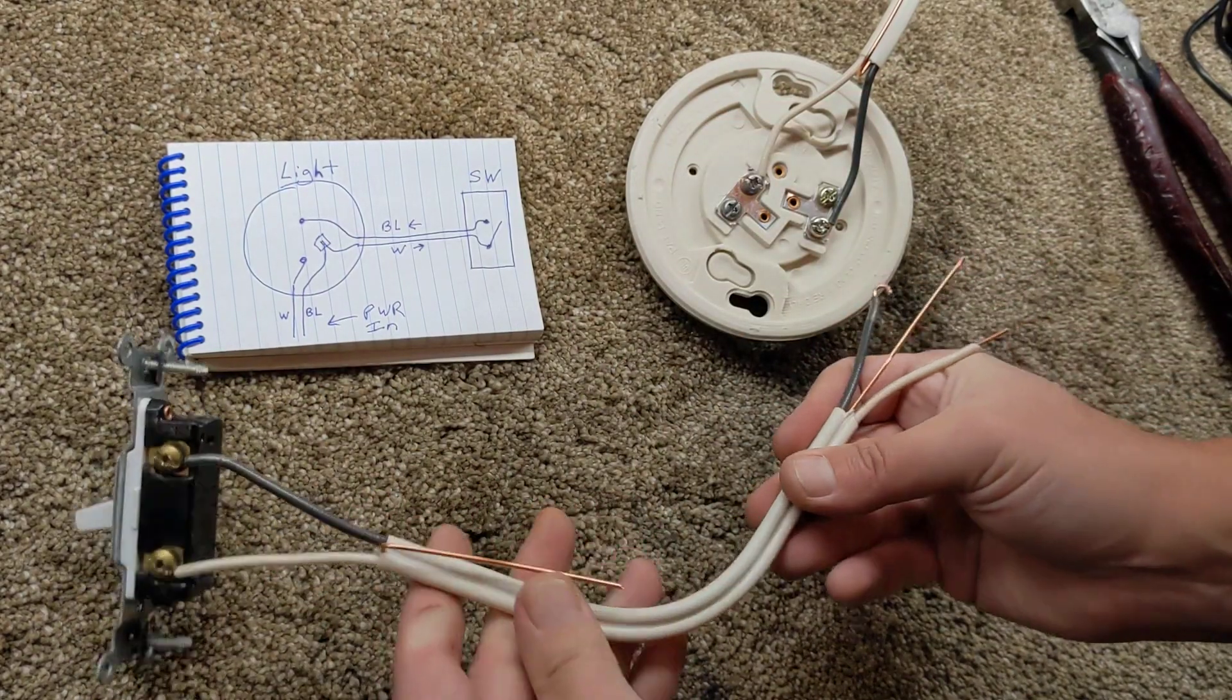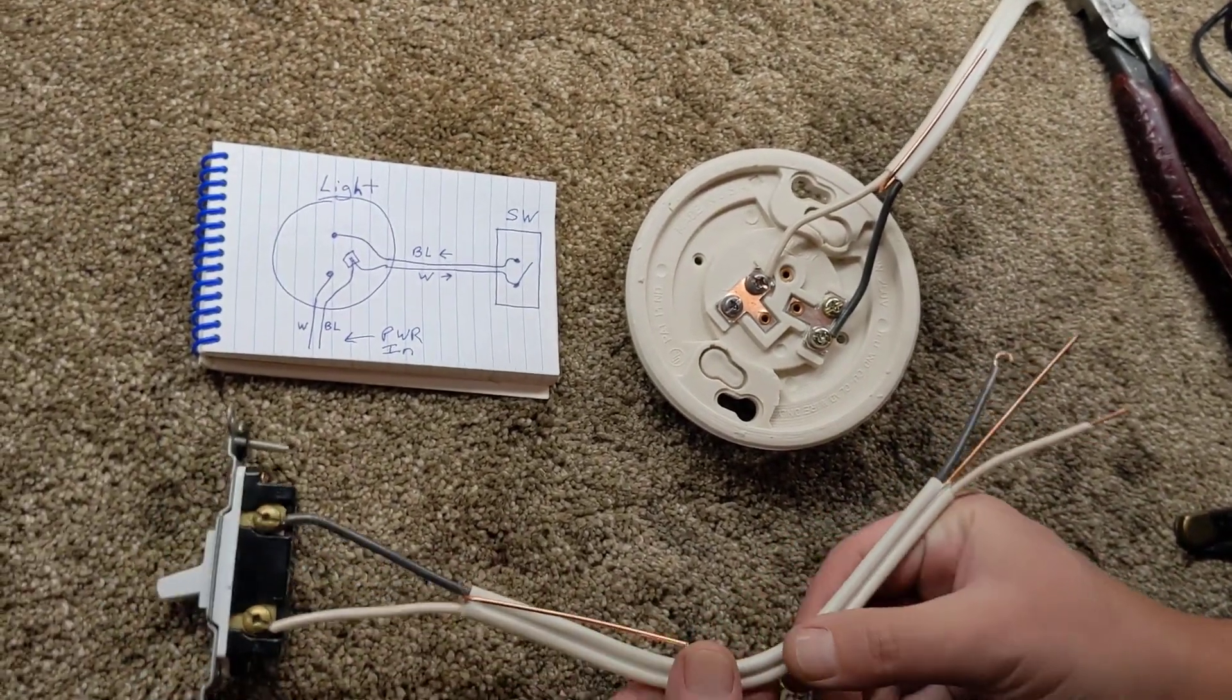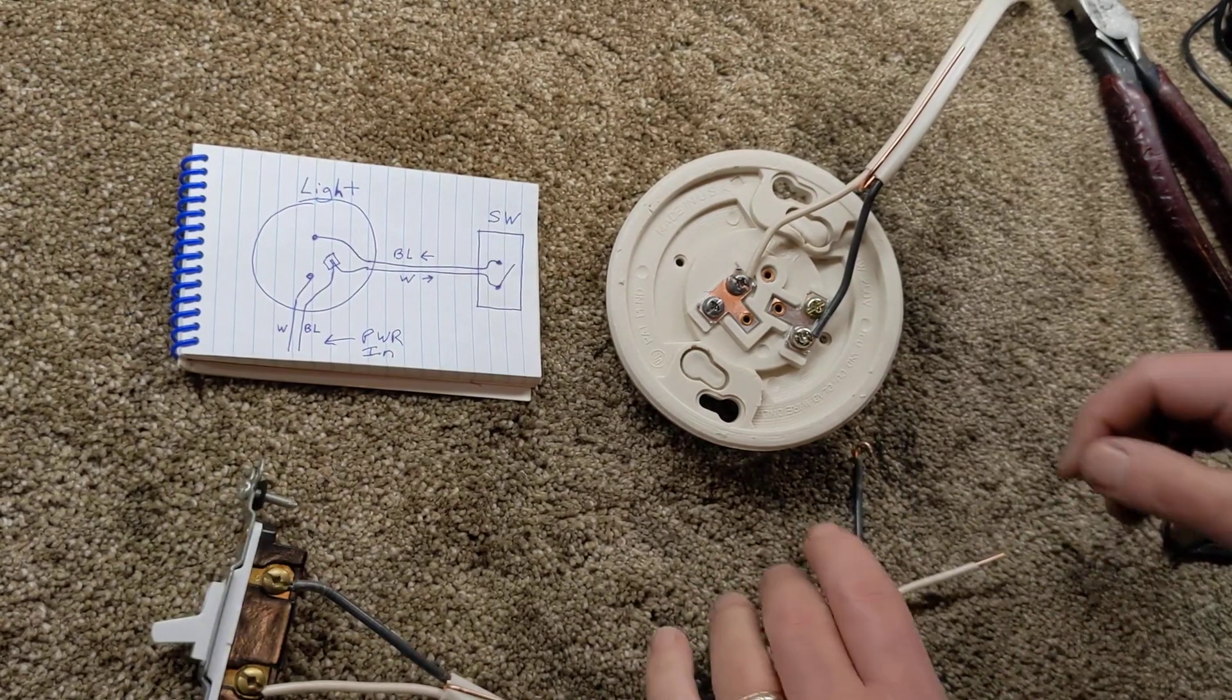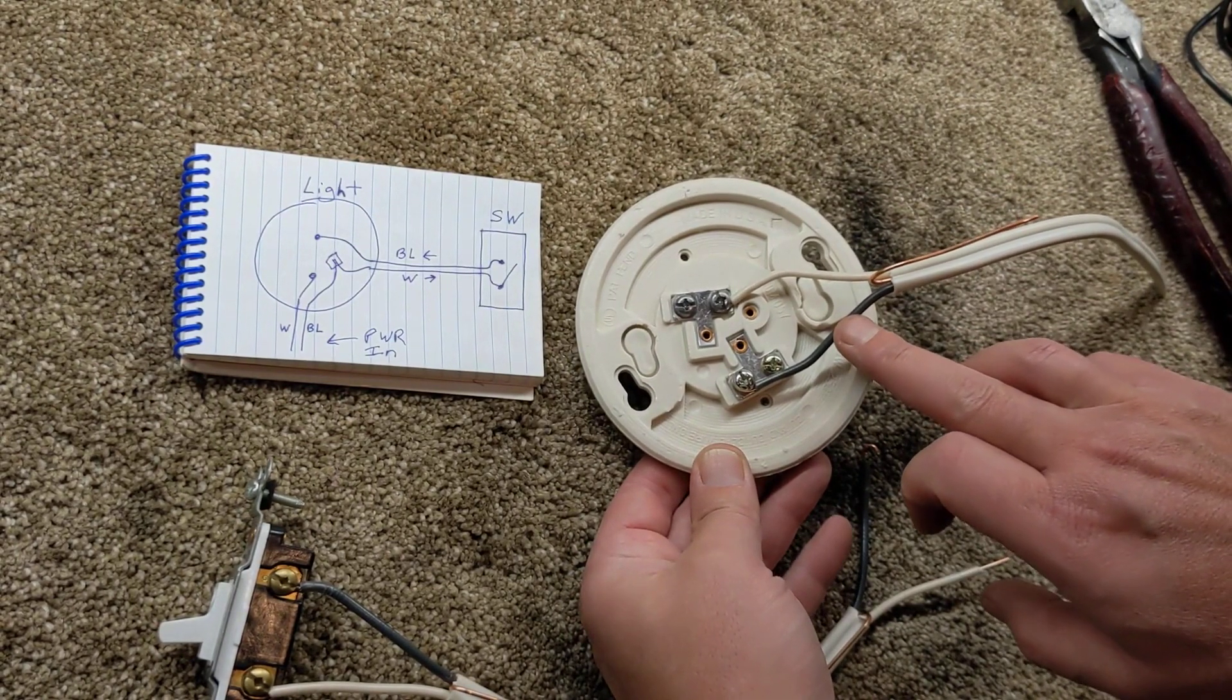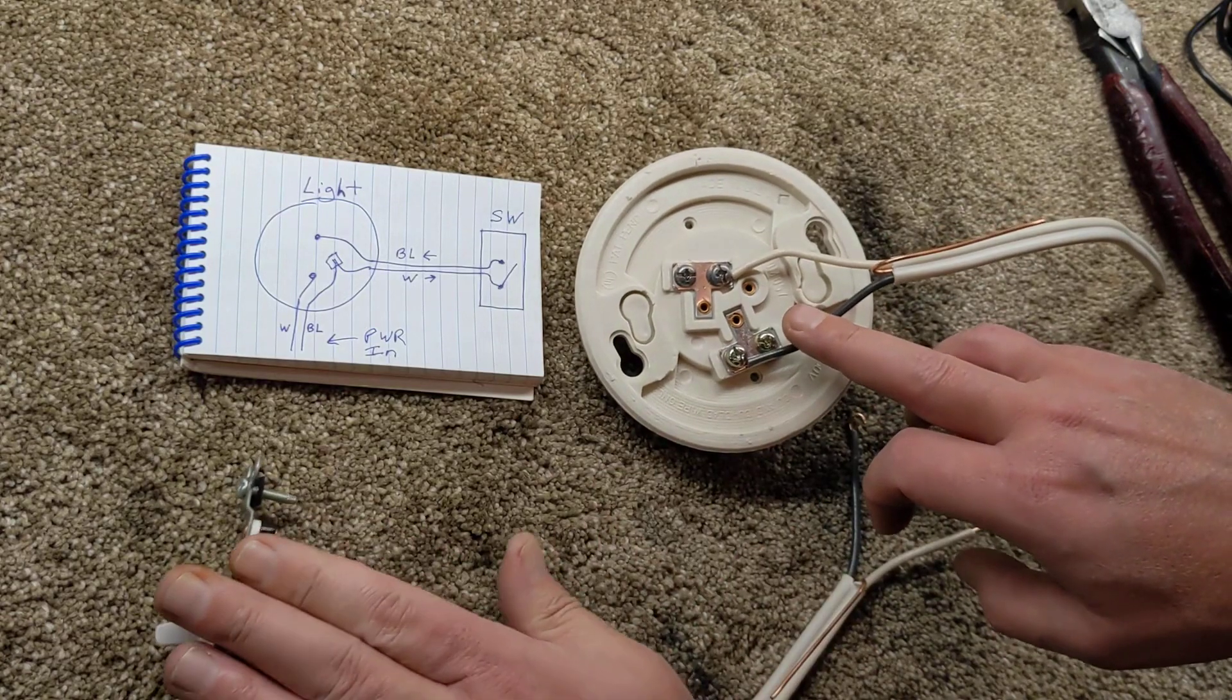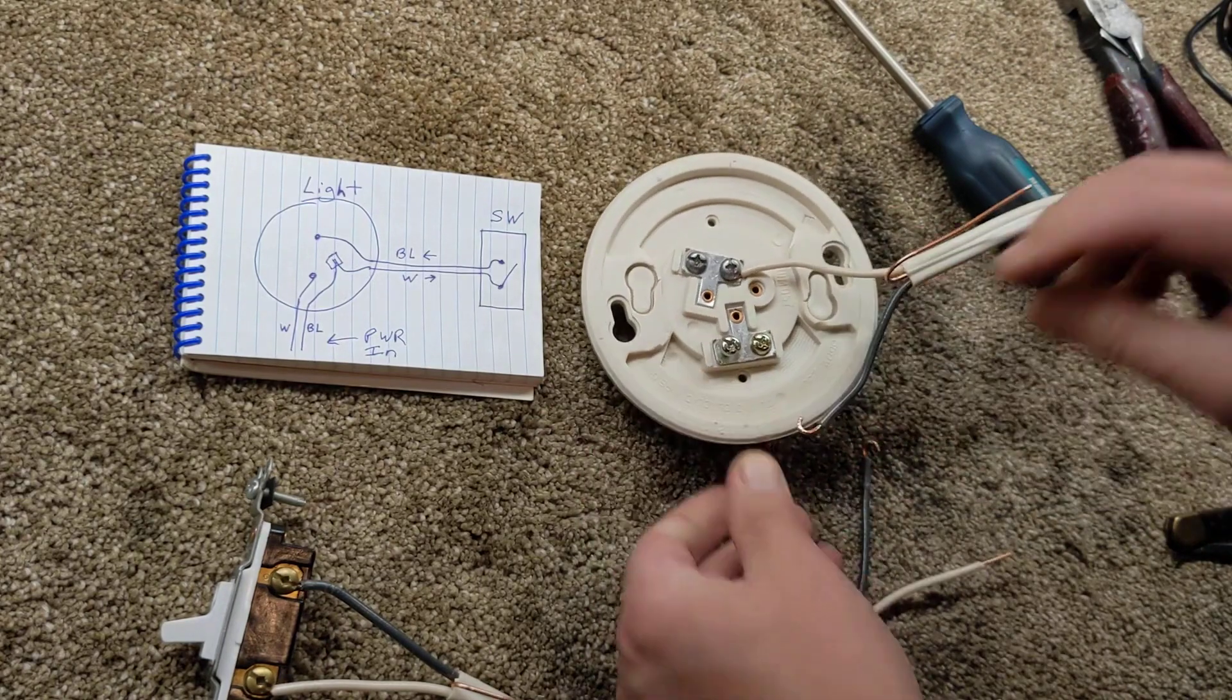So now what we want to do, again I'll just move this ground out of the way, it would go to the box. We want to disconnect the hot. In the end, what we're doing is we want to switch this leg right here. So we want to put a switch here before the power gets to the actual light. It's going to come back on your neutral no matter what, so this is the one that we want to switch. That's the circuit we want to throw into. So let's disconnect that.